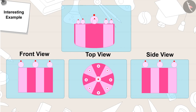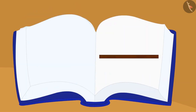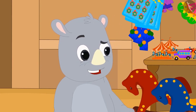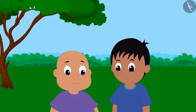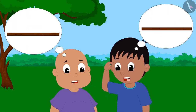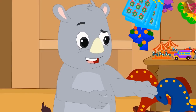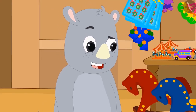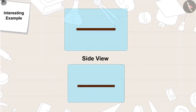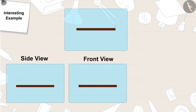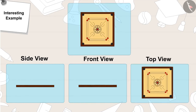Gaggoo said: this is your last picture. Let's see if you can at least identify this object. Raju and Bablu did their best but they could not identify the object. They were embarrassed and said: we don't know this as well. Ha ha ha, you lost! This is a carom board. A carom board looks like this from the side, like this from the front, and like this from the top.